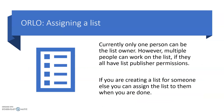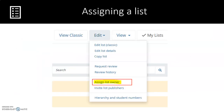Sometimes more than one person will work on an Orlo reading list. Often libraries and administrators will create reading lists for course conveners, or sometimes different academics will work on a list together. As part of this process, one person may wish to assign the reading list to another person. This can be done by using the edit menu at the top of an Orlo reading list and clicking on assign list owner.